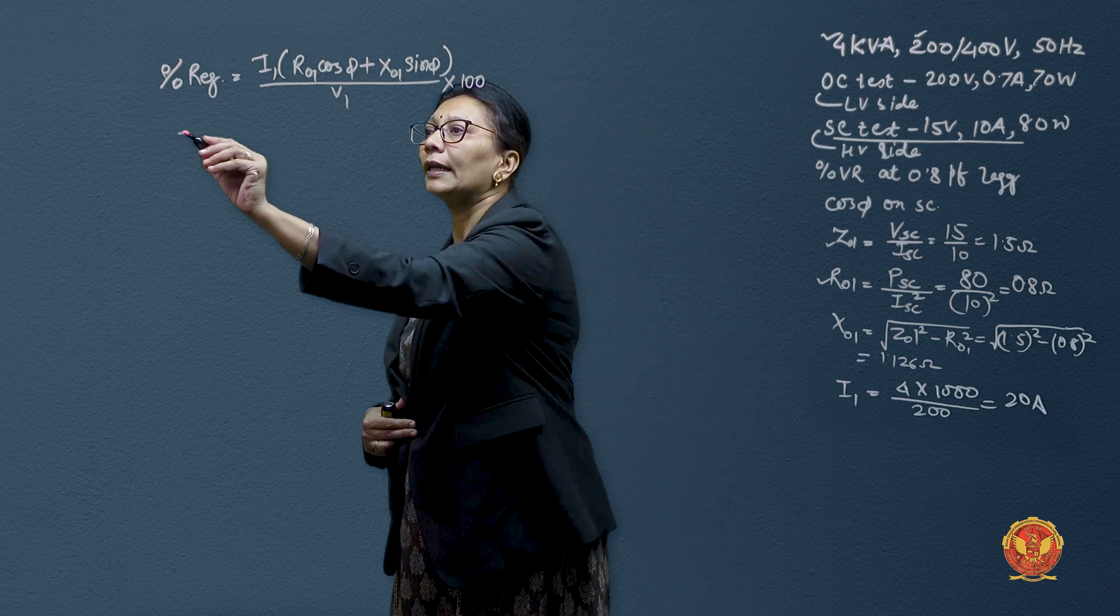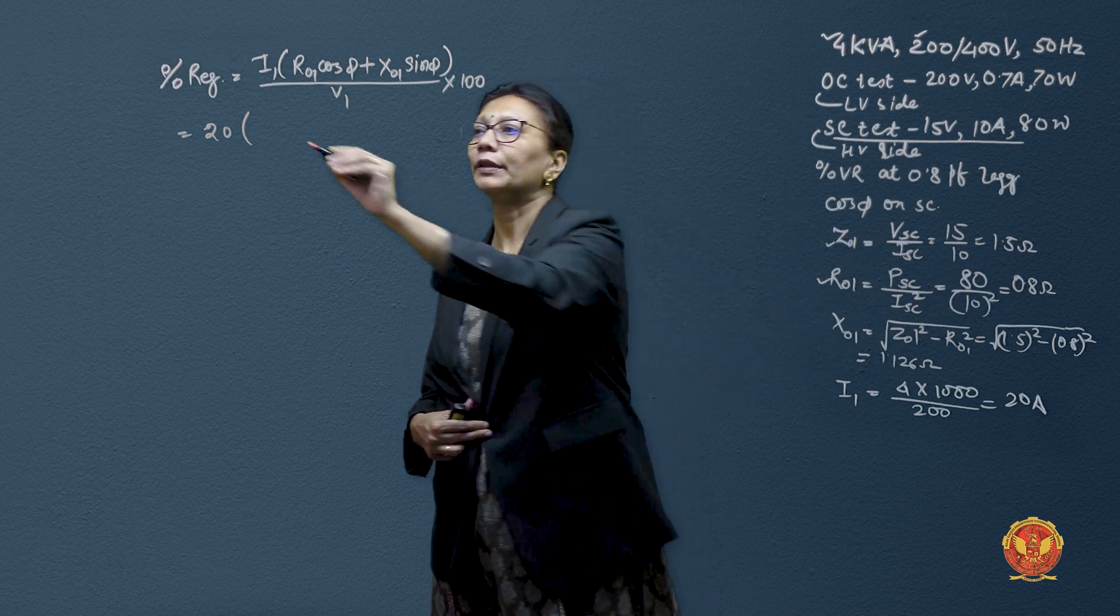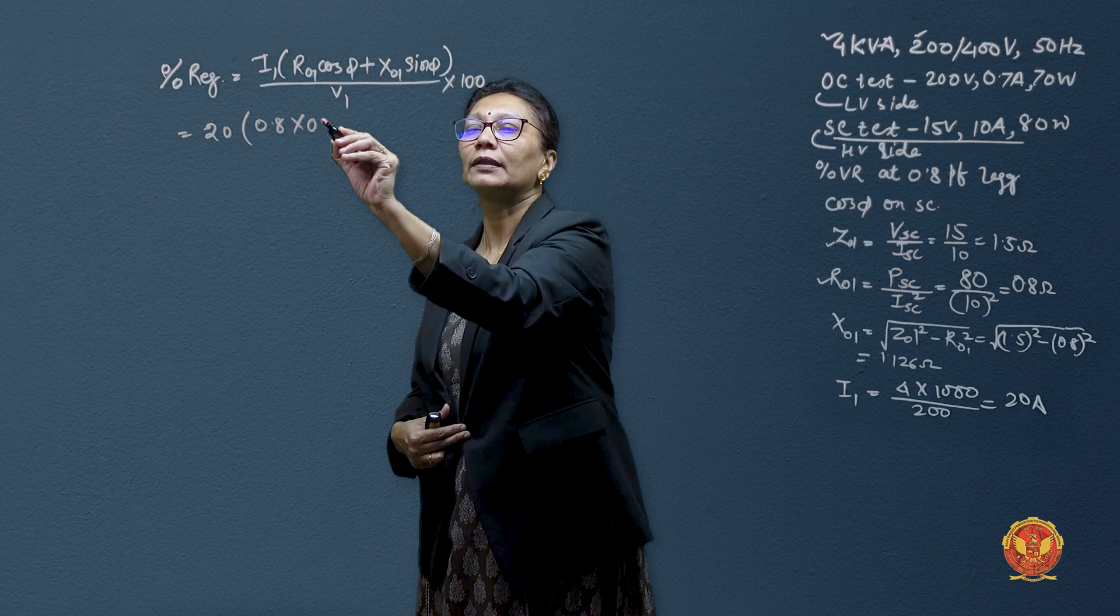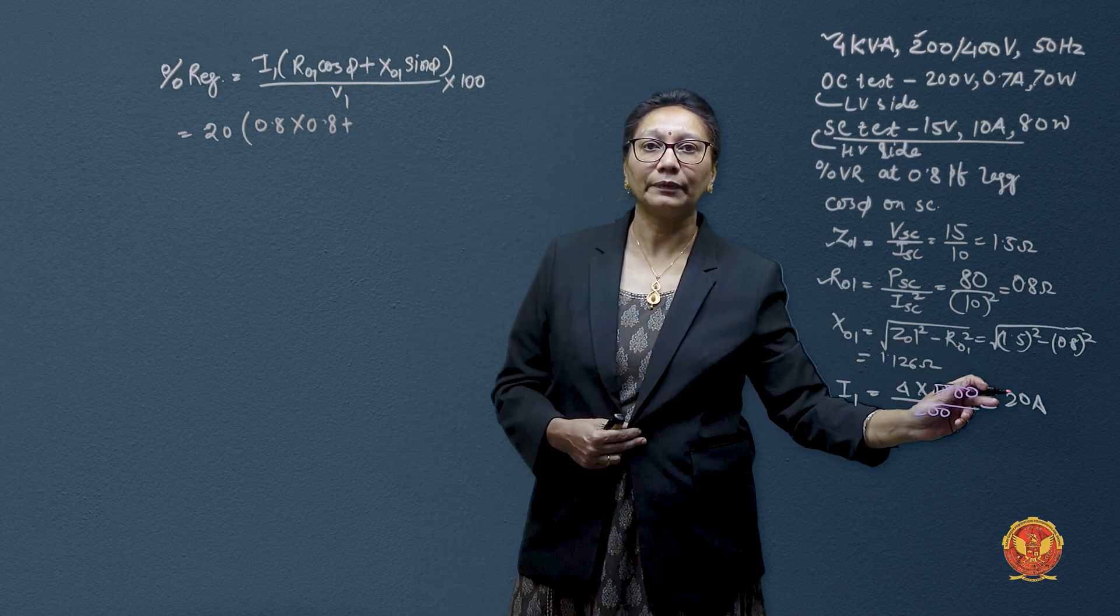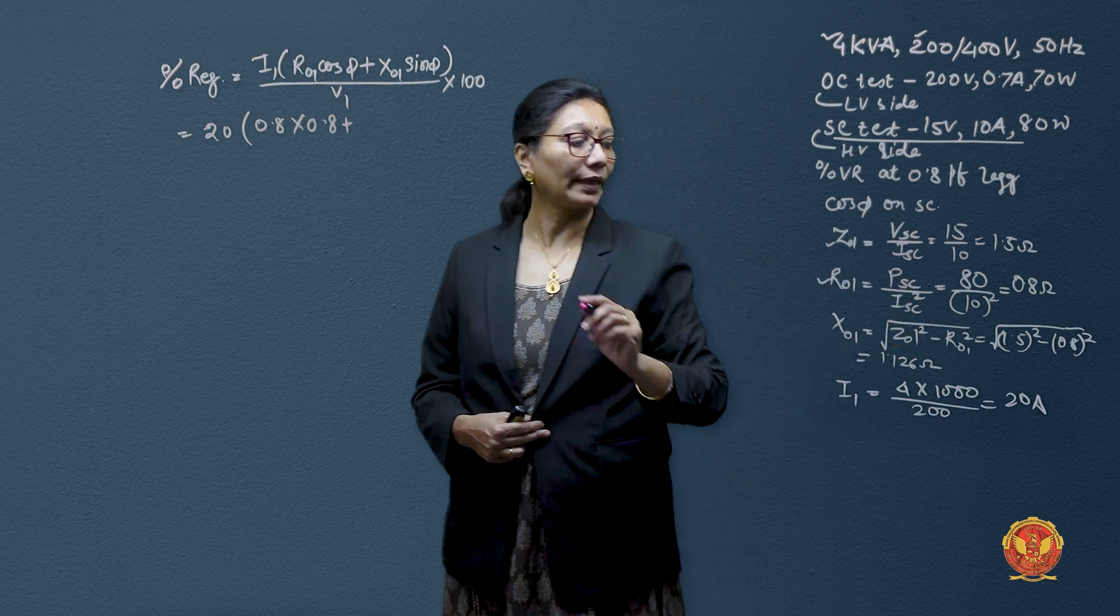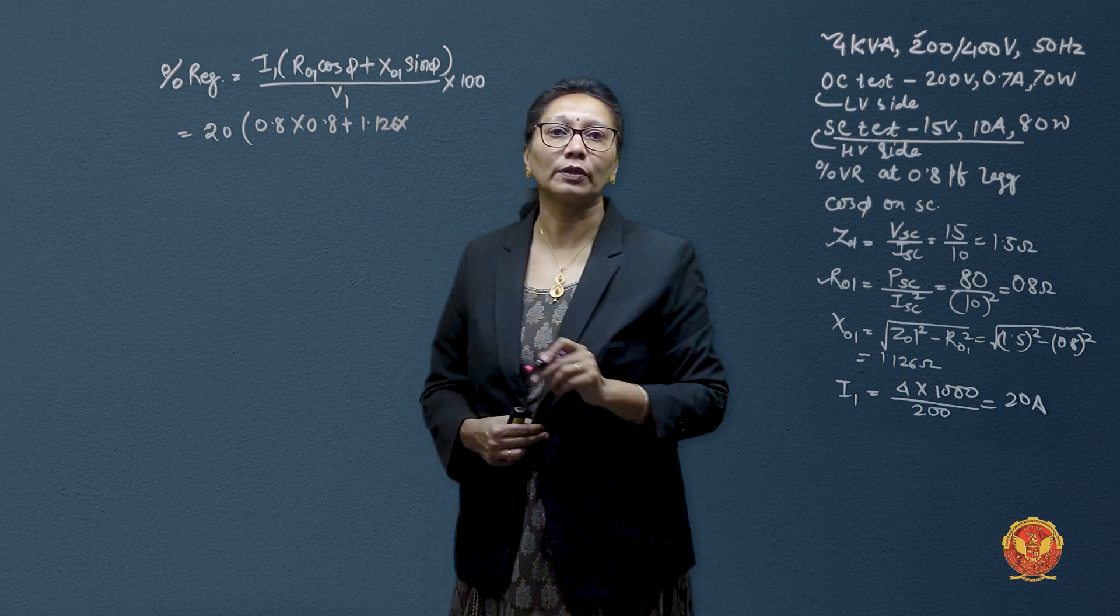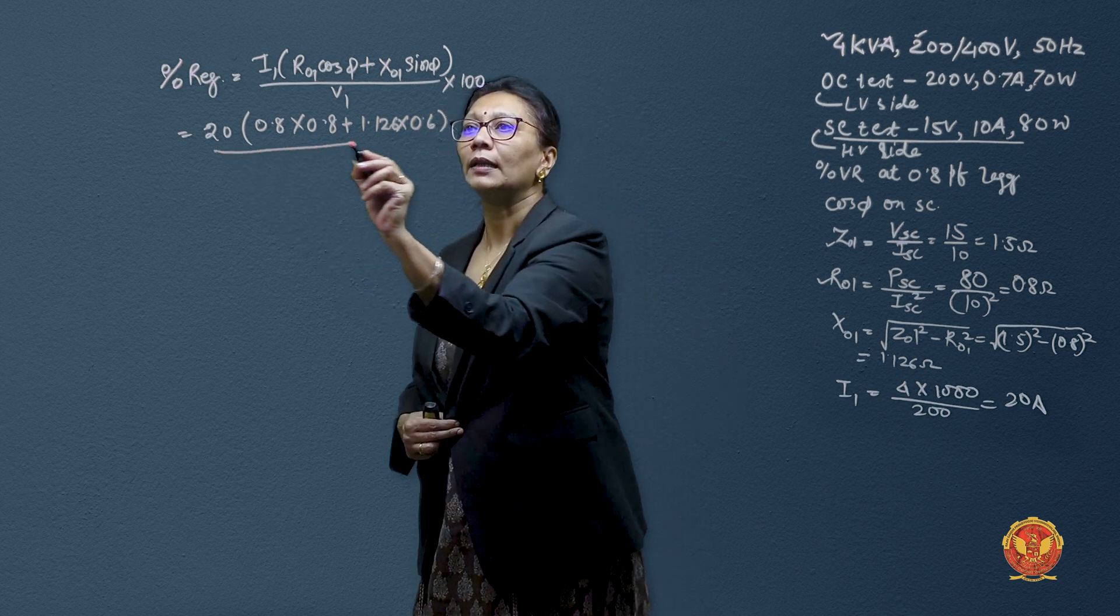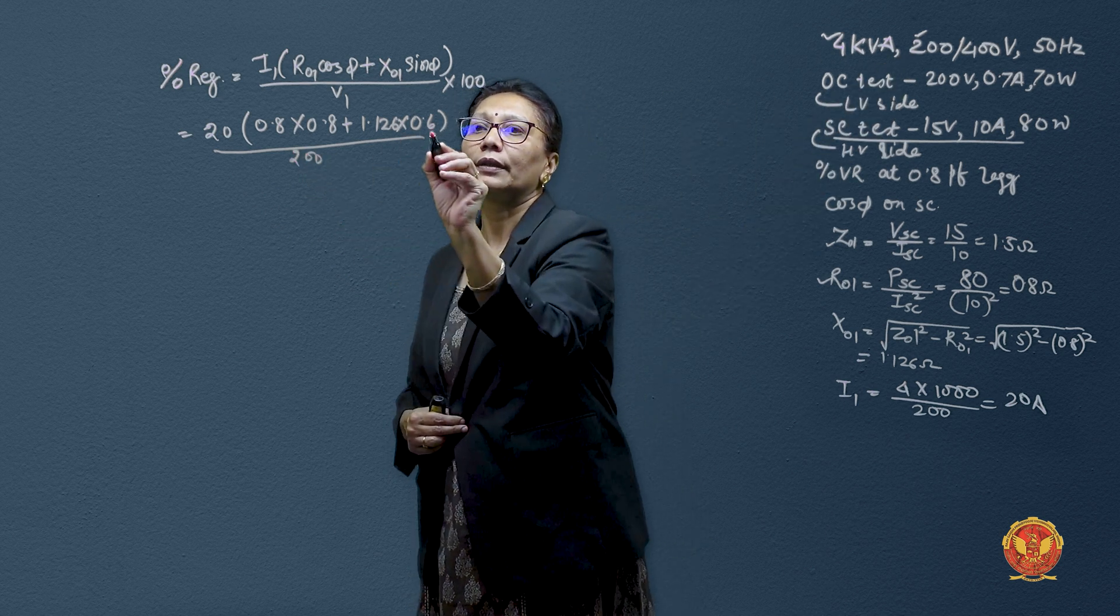Let us place the values. I_1 was 20 amperes. R_01 is 0.8 ohms. And as given in question, we have to find for 0.8 power factor. In this case it is given and then we are having X_01 as 1.126 into sin phi. For 0.8 cos phi, sin phi is 0.6 divided by primary voltage that is 200 into 100.